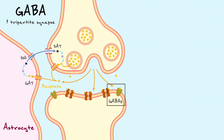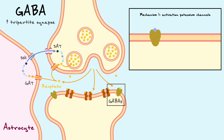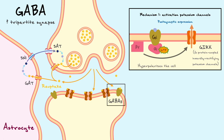Now let's discuss the metabotropic GABA-B receptors. These receptors are generally associated with two main mechanisms of action. The first mechanism is similar to what we covered for muscarinic acetylcholine receptors and metabotropic glutamate receptors: it acts through the Gi protein and mediates the activation of GIRK potassium channels to inhibit the postsynaptic cell. Given that the reversal potential of potassium is about -80 mV — always below the resting membrane potential — opening these channels causes an efflux of potassium that hyperpolarizes the cell. This channel activation comes from dissociation of the beta and gamma subunits during Gi protein activation.